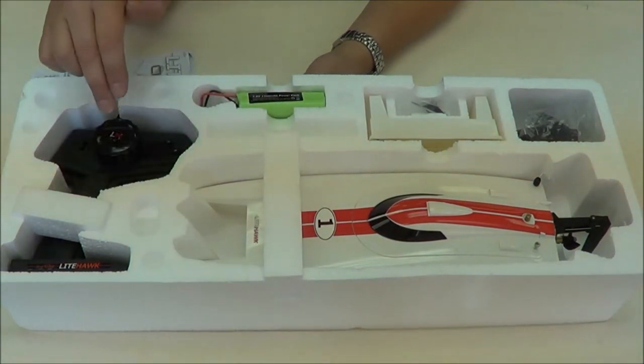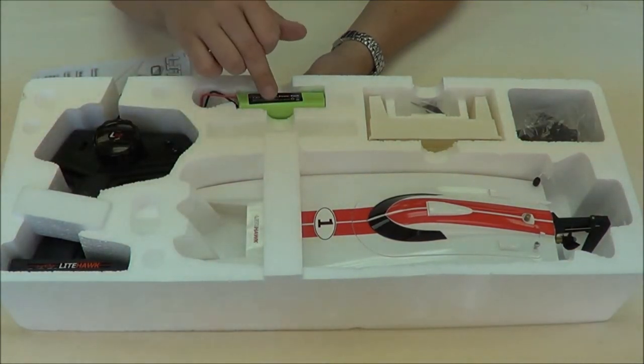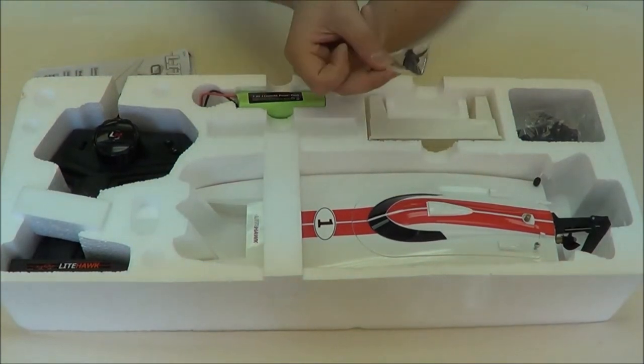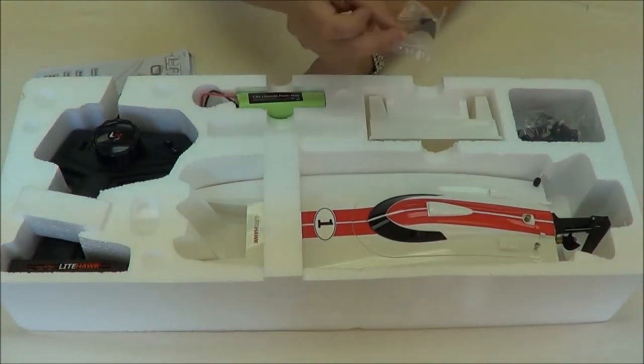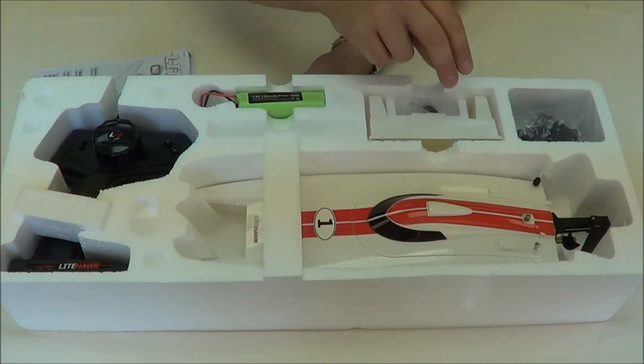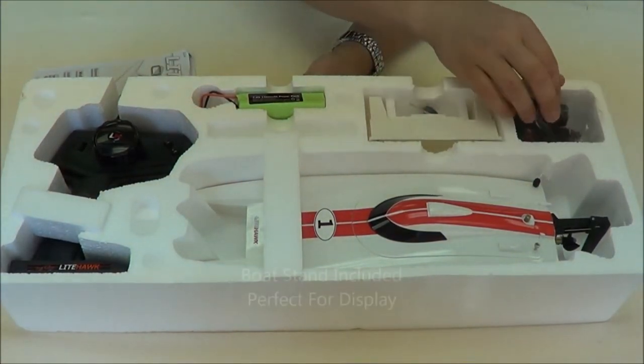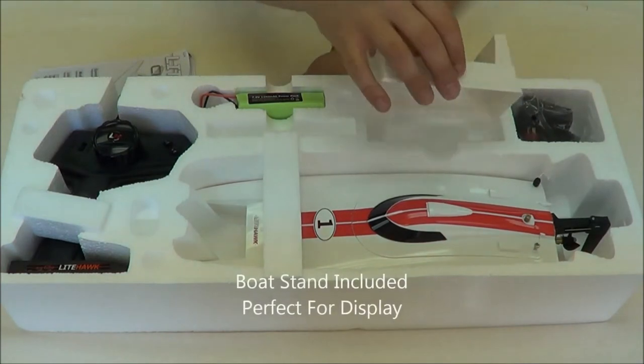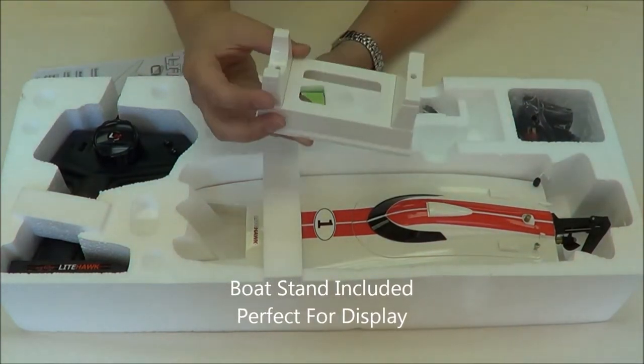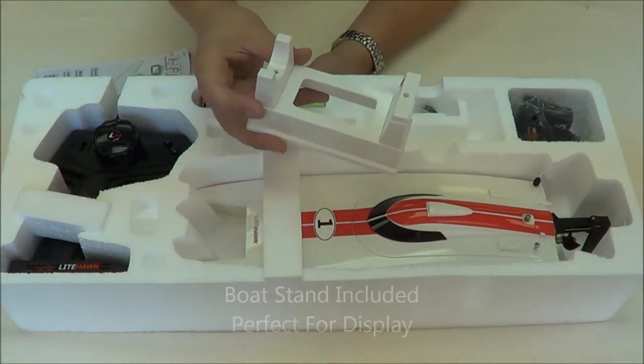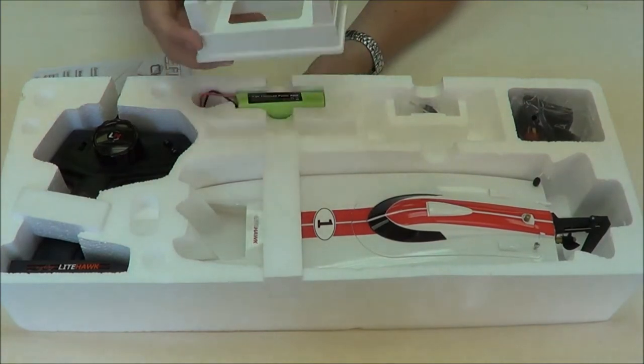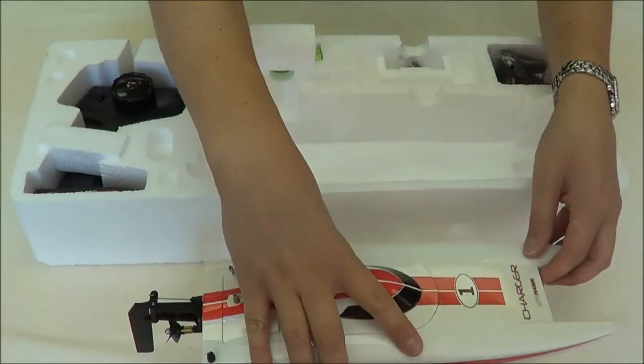We'll put that aside. Here you're going to find the radio, the battery for the boat, a bag with an allen key and the propeller in case you hit a twig or log in the water, the charger to charge the battery, and one nice thing is we actually have a stand so when you're not using your boat, it can sit on display.